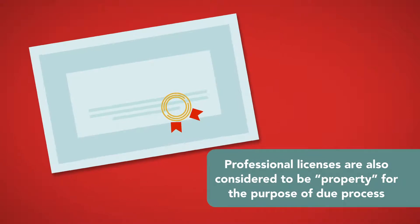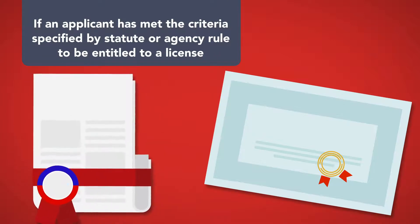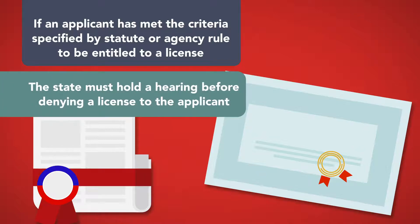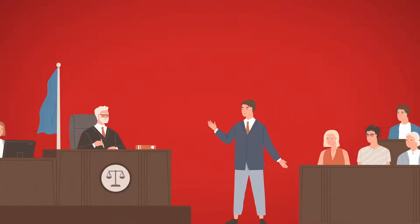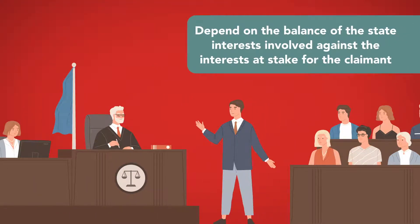Professional licenses are also considered to be property for the purpose of due process. If an applicant has met the criteria specified by statute or agency rule to be entitled to a license — such as a license to practice medicine or law — then the state must hold a hearing before denying a license to the applicant. The nature of the hearing and the extent of the processes associated with it depend on the balance of the state interest involved against the interest at stake for the claimant.